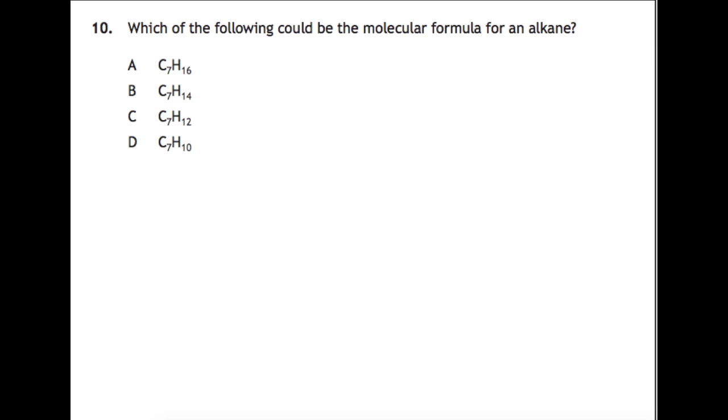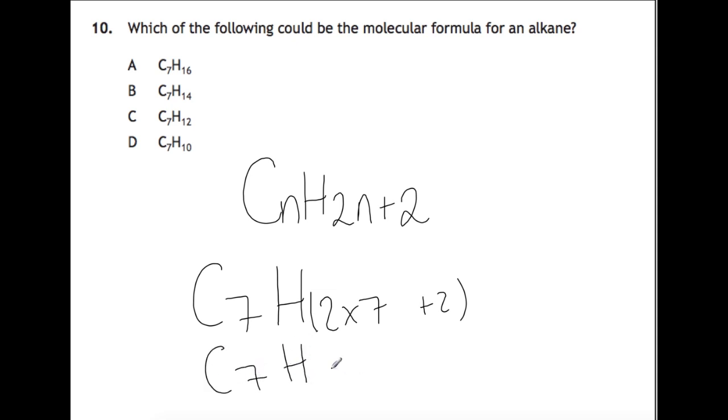Here we're looking at alkanes. Alkanes have a general formula of CnH2n plus 2. All of these are C7. So that would be C7H and then if we do 2 times 7 plus 2, our answer should be C7H16 which is A.